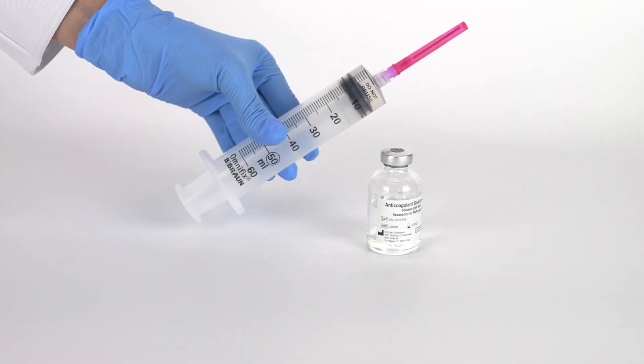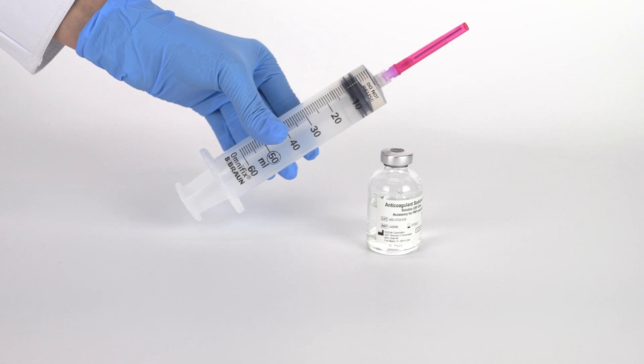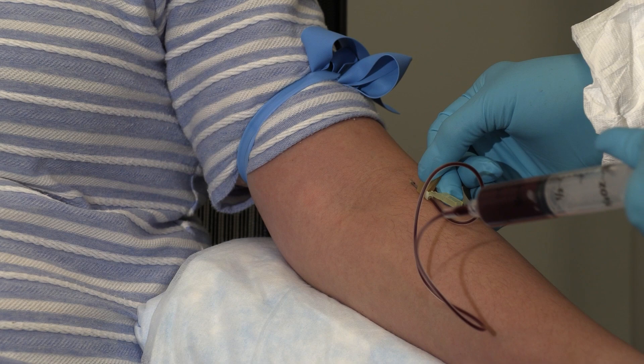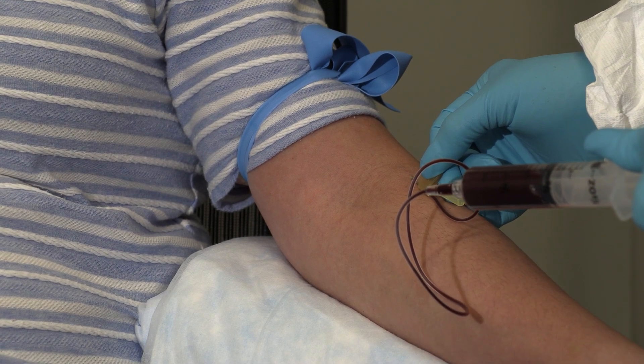Fill a 60 milliliter sterile syringe with 6 milliliters of citrate anticoagulant. Then draw 54 milliliters of blood from the patient, filling the syringe to 60 milliliters.